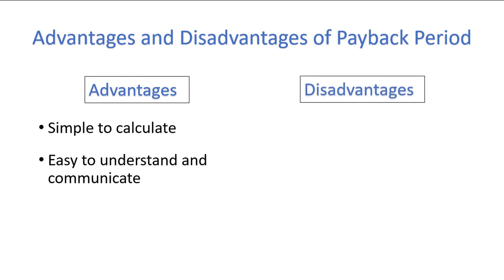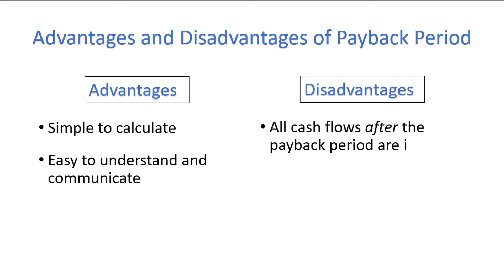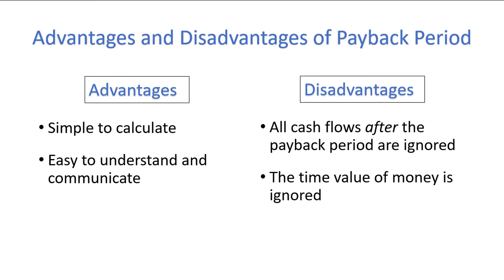As for disadvantages, much of the finance community tends to frown upon the payback period method for a variety of reasons. The first disadvantage is that all cash flows after the payback period are completely ignored. Two investments that both pay for themselves in 3 years might have radically different cash flows after 3 years, and the payback period method completely ignores this difference. The second disadvantage, which is a big one, is that the payback period completely ignores the time value of money. As long as the cash flow happens before the payback period, a $50,000 cash flow earned today is treated identically to a $50,000 cash flow earned in 5 years.